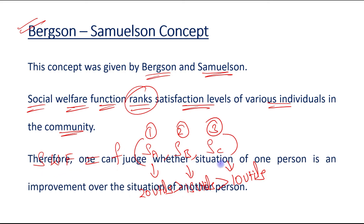Therefore, one can judge whether the situation of one person is an improvement over the situation of another person. For example, we can easily say that the situation of person A is an improvement over the situation of person C, because person A is getting a higher utility of 20 utils as compared to the utility of person C. So yes, the situation of person A is an improvement over the situation of person C.